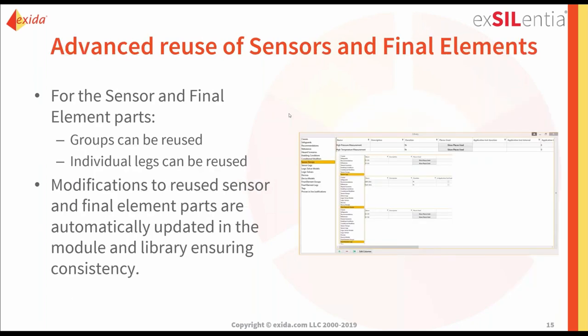Groups can be reused. Within the library we can see all groups, where they are used, where they're deployed, and how changes propagate. If you make a change to a particular group, it's automatically deployed to all the safety functions it is part of. So if you have a final element group or sensor group that's the same between different safety functions, there's one place to make changes, and it's automatically applied to all your safety instrumented functions — a huge time saver.